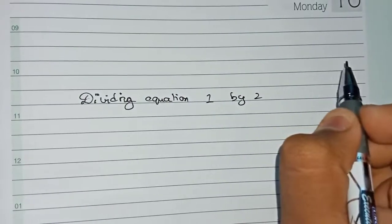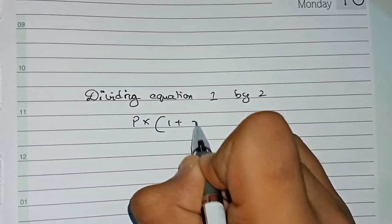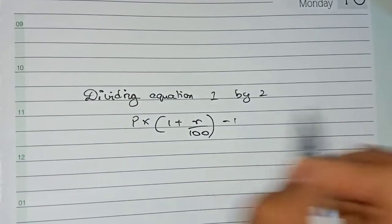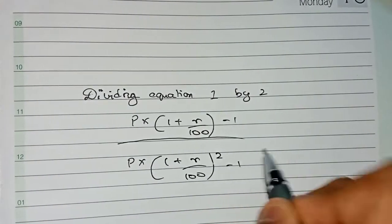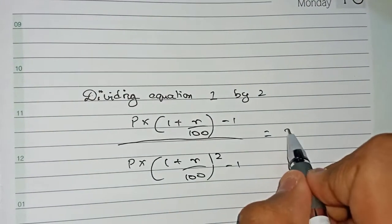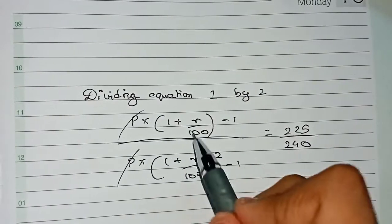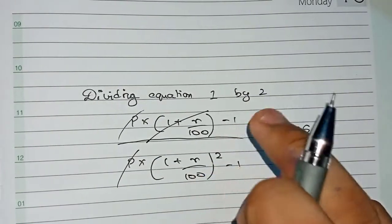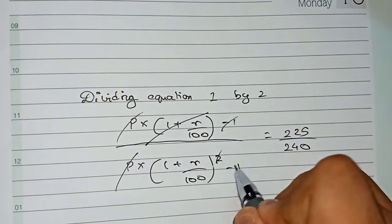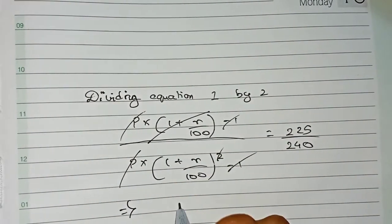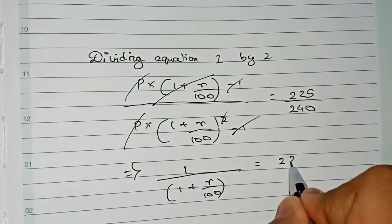Now dividing equation 1 by equation 2: P into (1 + r/100)¹ minus 1, divided by P into (1 + r/100)² minus 1, equals 225/240. We cancel the common principal P, and since the power difference reduces (1 + r/100)² to (1 + r/100)¹, and the minus 1 terms also cancel, we get 1/(1 + r/100) = 225/240.